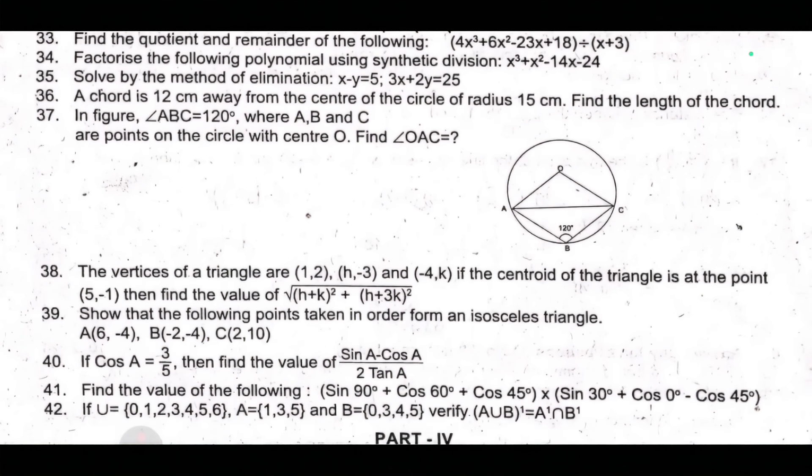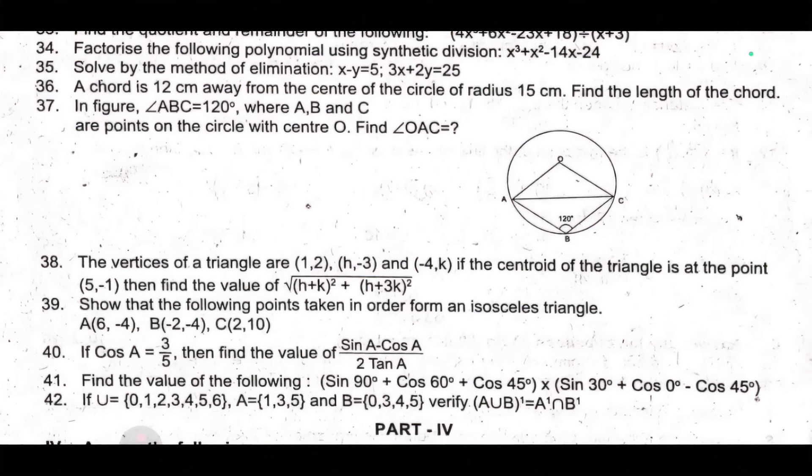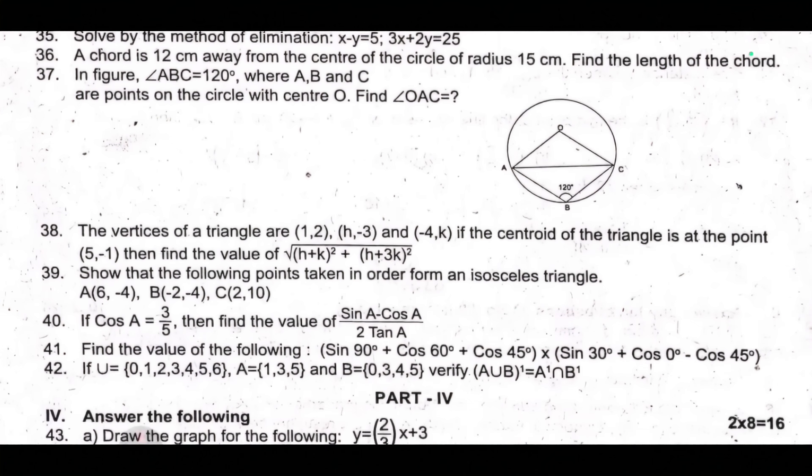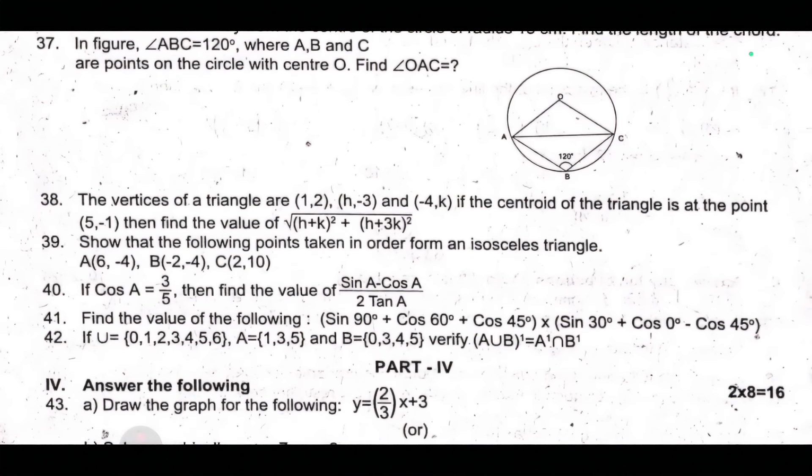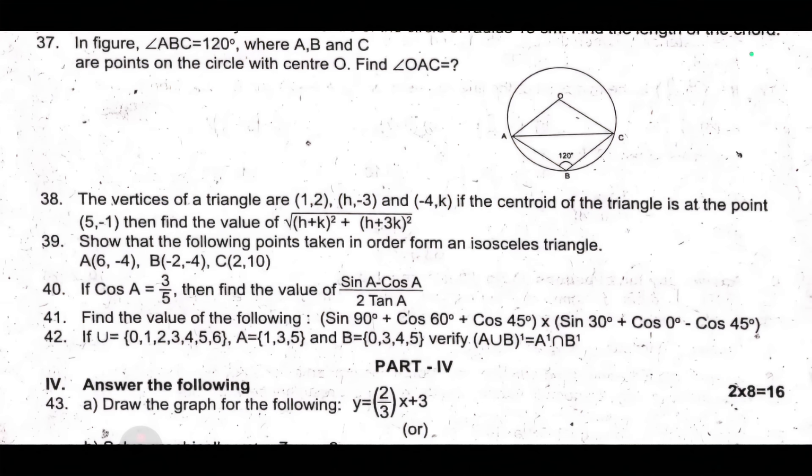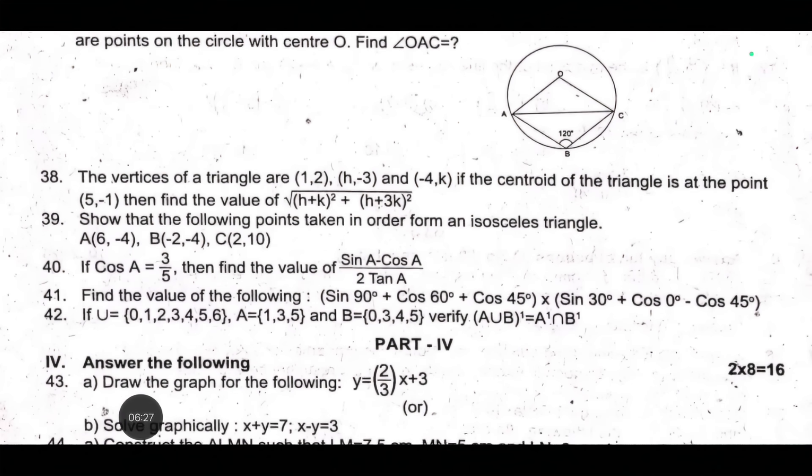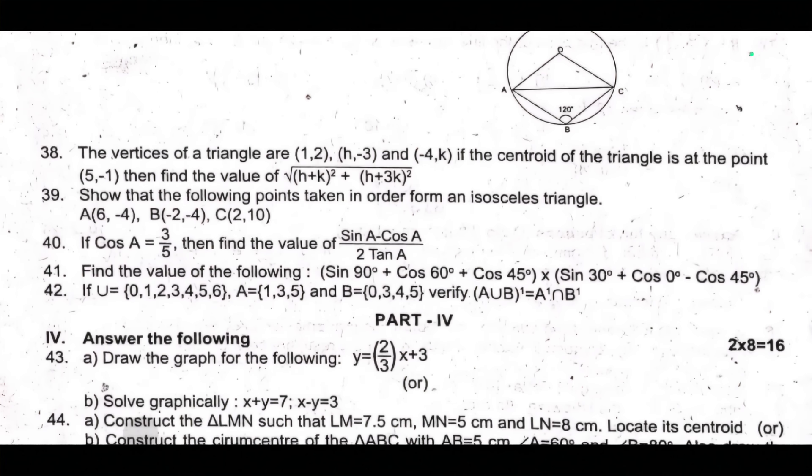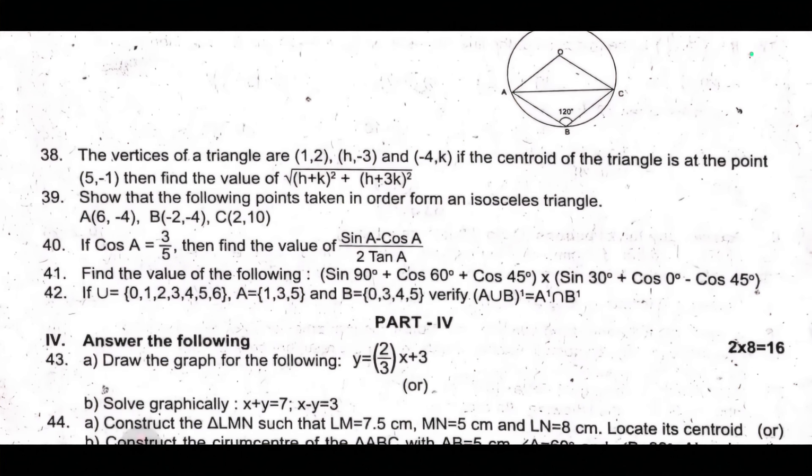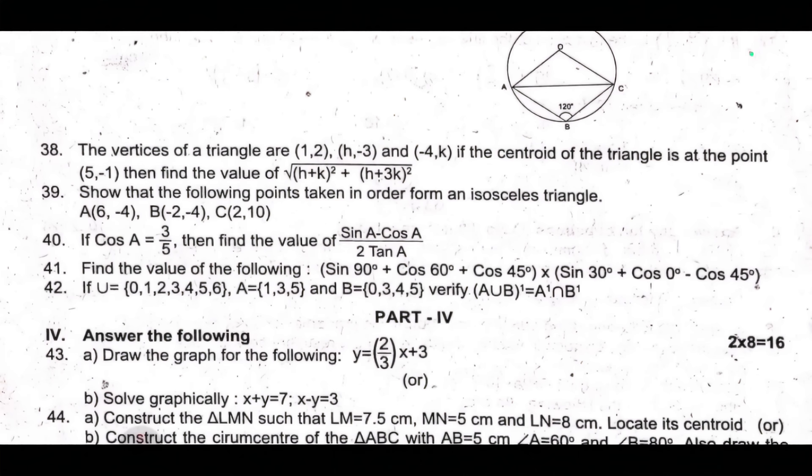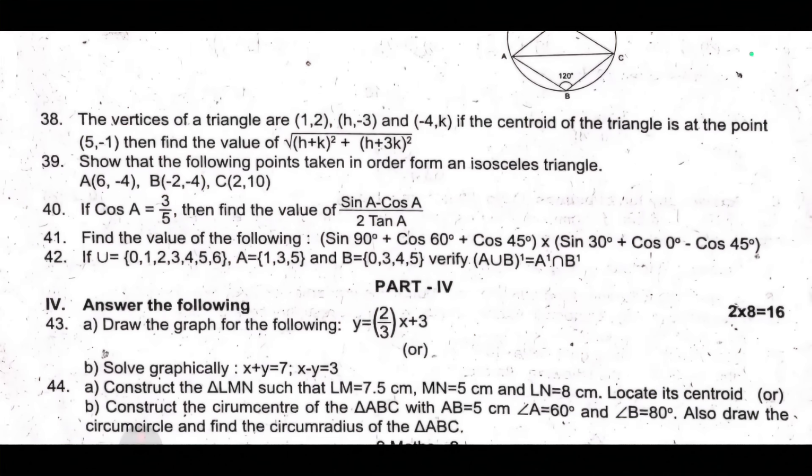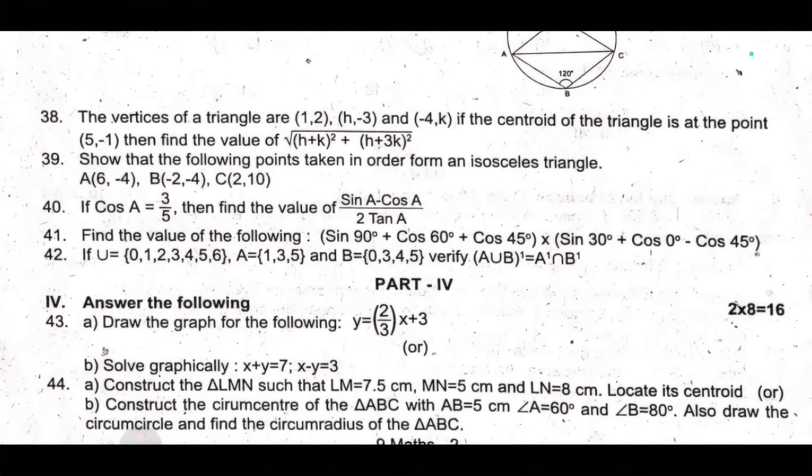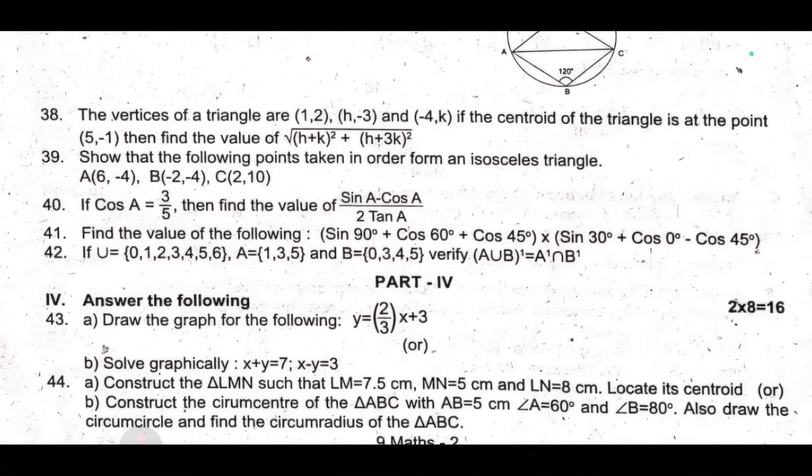Thirty-ninth, show that the following points taken in order form an isosceles triangle: A(-4), B(-2, -4), C(2, 10). Fortieth, if cos A equal to 3 by 5, then find the value of (sin A minus cos A) by 2 tan A. Forty-first, find the value of the following: sin 90° plus cos 60° plus cos 45° into sin 30° plus cos 0° minus cos 45°.